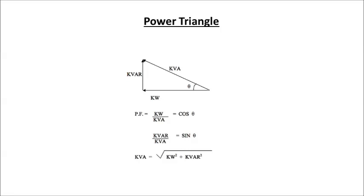Now if we apply basic trigonometry to this right angle triangle, we will conclude that cos theta equals KW divided by KVA — that is, the ratio of active power to apparent power. Now this cos theta is nothing but the power factor. So the explanation of power factor becomes very simple: we can define power factor as the ratio of active power to apparent power, that is KW by KVA.